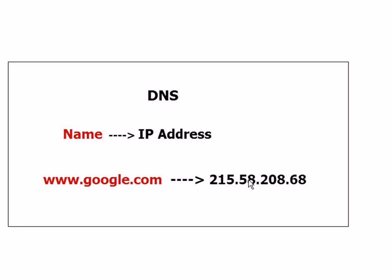IP addresses associated with web servers and mail servers on the internet are static IP addresses, which means they're fixed, so the name-to-IP-address relationship is constant. Those name-IP-address records in DNS tend to be manually assigned. But on large corporate internal networks or small home and home business networks, the IP addresses associated with machines tend to be dynamic — assigned by a service called DHCP, which on small business networks is typically built into the home router.